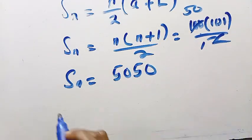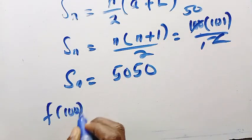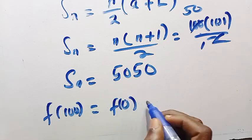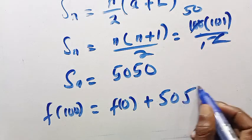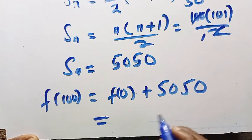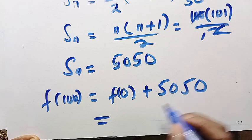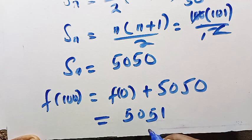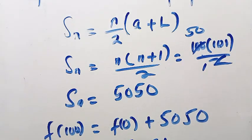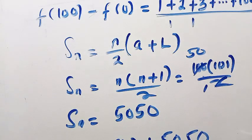Therefore, f(100) - f(0) = 5050. We take f(0) to the other side, so f(100) = f(0) + 5050. Since f(0) = 1, therefore we have 1 + 5050, that is 5051. So this is how to solve this problem. Thanks for watching and see you in the next video.